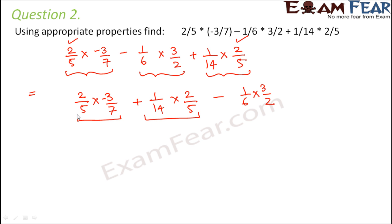In these two terms, how do we apply distributive property? The common term is 2 by 5, which is our a. So a into b plus c. So b is minus 3 by 7 and c is 1 by 14, minus 1 by 6 into 3 by 2. So here 3 goes into 6.